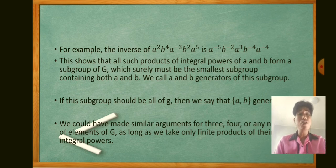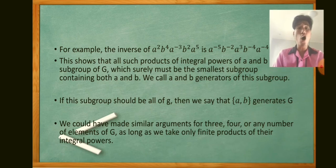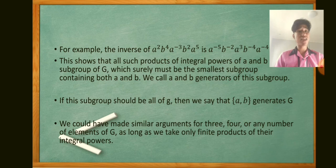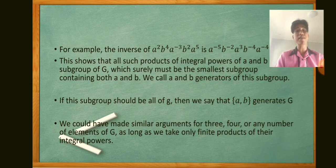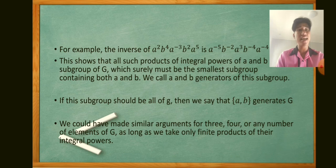This subgroup is surely the smallest subgroup containing both a and b; we call a and b generators of this subgroup. If this subgroup is all of G, then we say that a and b generate G. Similar arguments hold for 3, 4, or any number of elements of G, as long as we take only finite products of their integral powers.